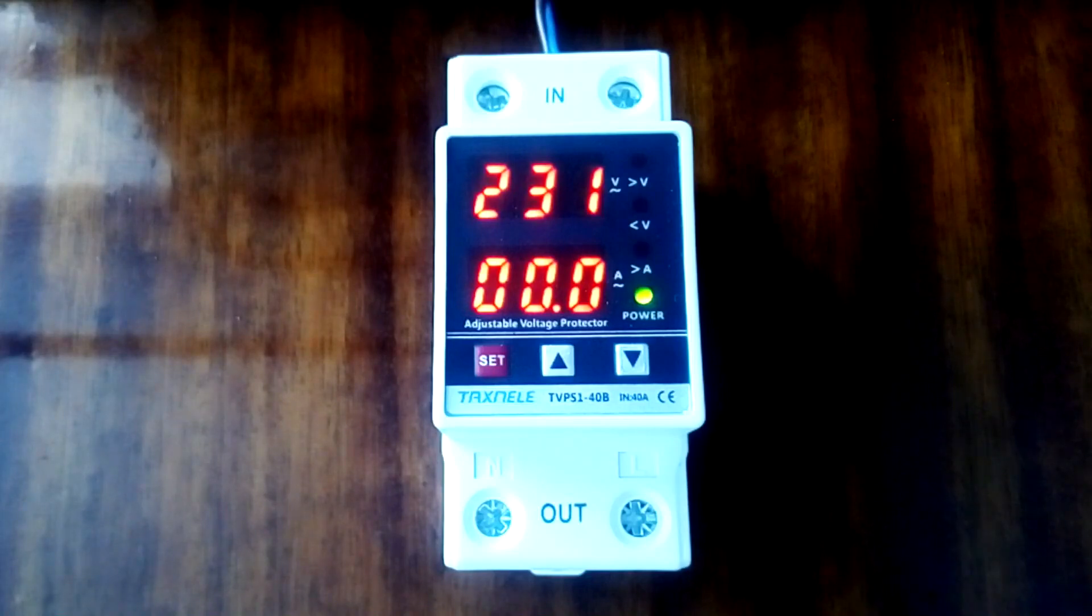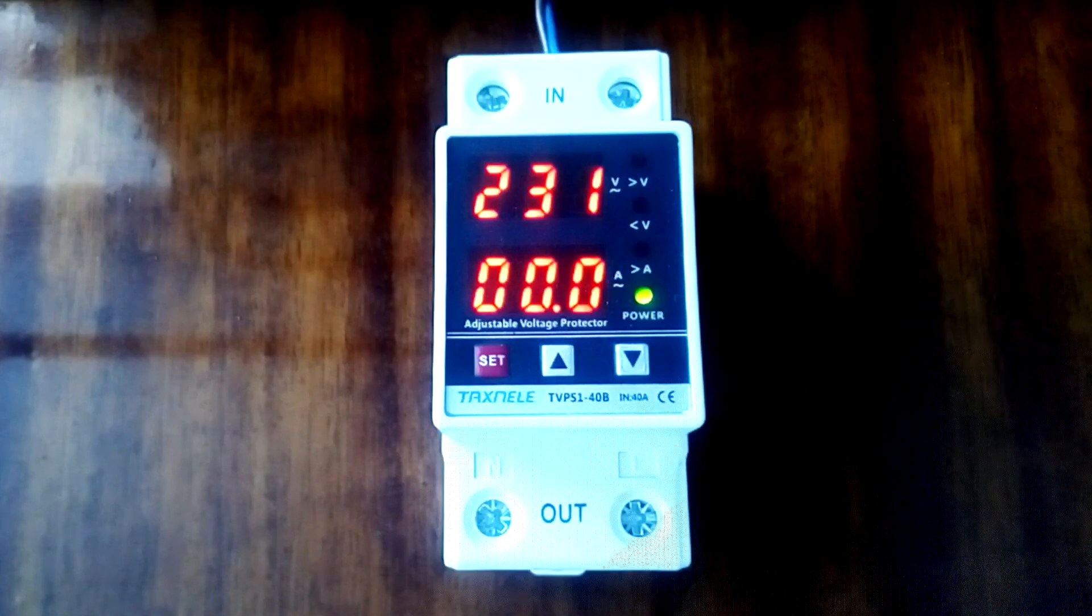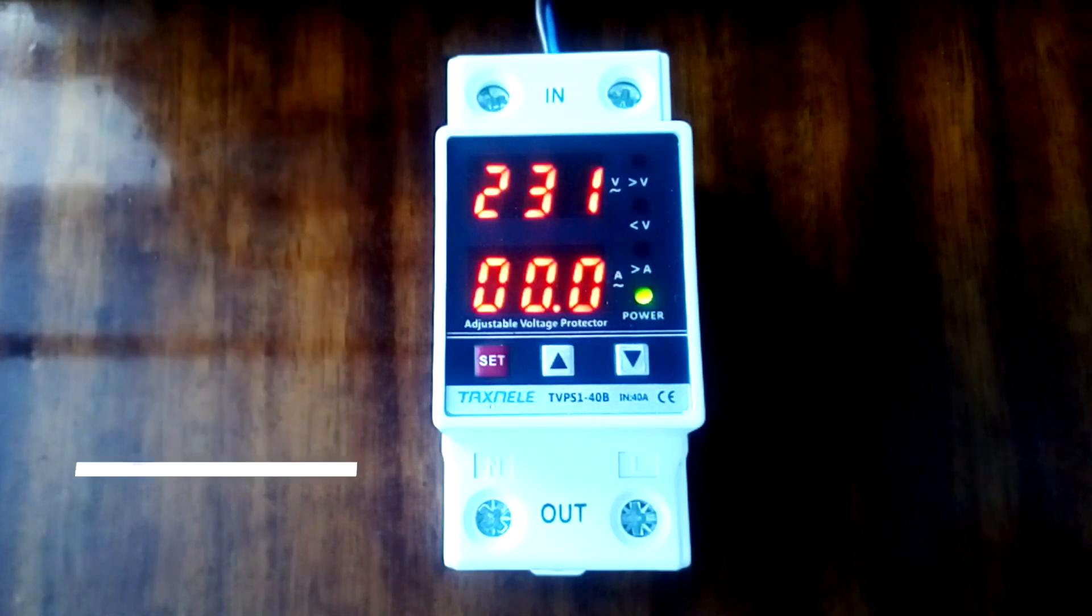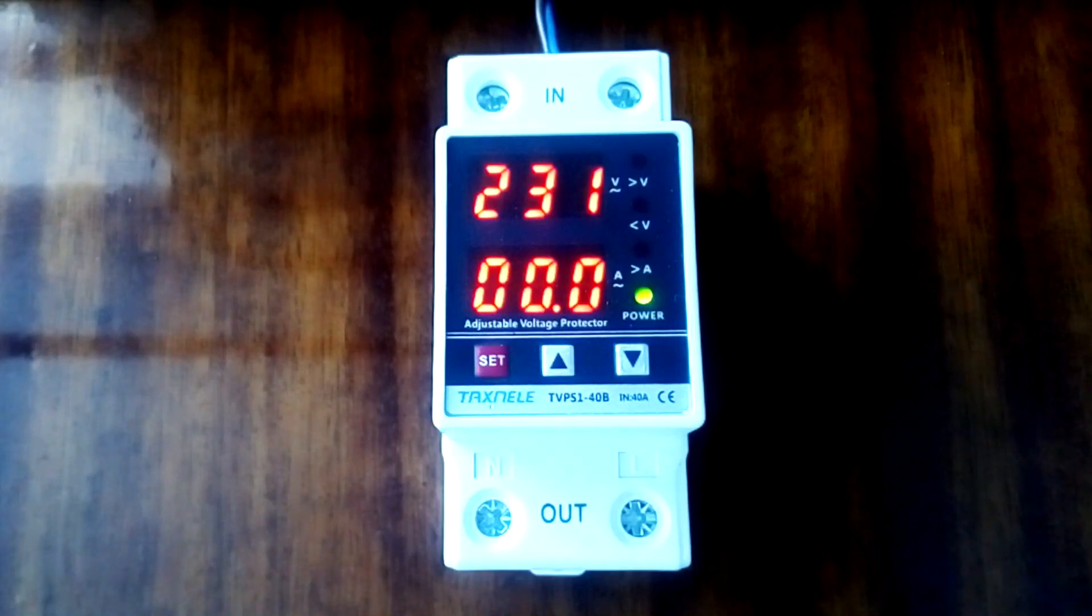Some appliances, such as gas boilers, require constant mains voltage. For this purpose, there are voltage stabilizers that can compensate for relatively slow voltage changes. Stabilizers should be used in conjunction with a voltage relay. They operate over a relatively narrow voltage range. When the voltage changes in this range, the stabilizer maintains the voltage around the nominal 230 volts. When the stabilization limits are exceeded, the voltage relay switches off the load. The relay is placed in front of the voltage stabilizer so that it protects the stabilizer from failure.